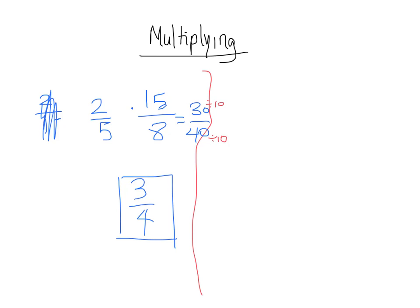But we have another option. So let's set this up again and start again. And you can choose whichever method you prefer. It's good to know both, though, because sometimes one is easier than another in a certain case. Alright, so same question. 2 over 5 multiplied by 15 over 8.